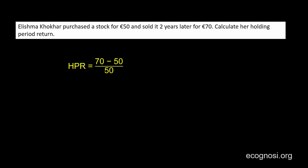Elish Mahoghar purchased a stock for 50 euros and sold it two years later for 70 euros. Calculate her holding period return. This is simply the end of period value of 70 minus the beginning of period value of 50, divided by the beginning of period value of 50. This is the same as 70 over 50 minus one, which gives us a 40% holding period return. To be more precise, we would label this the two-year holding period return.